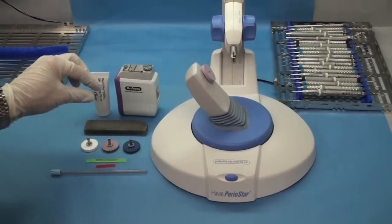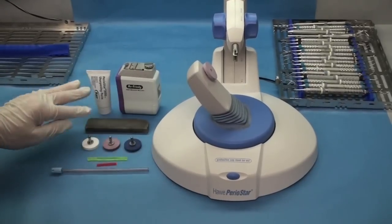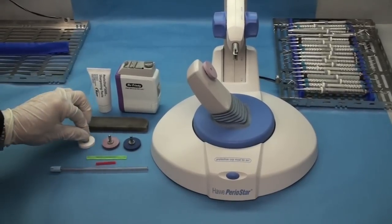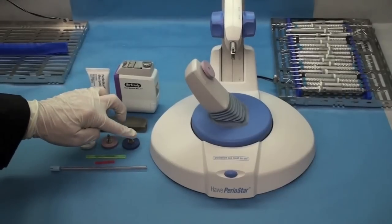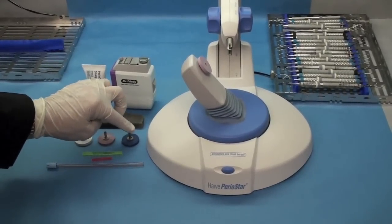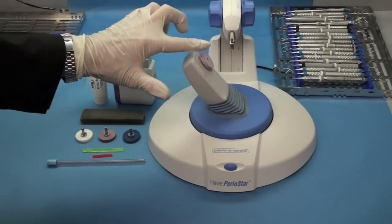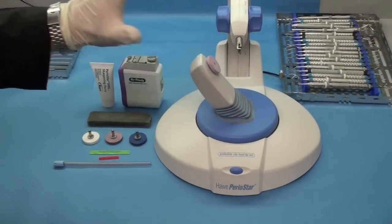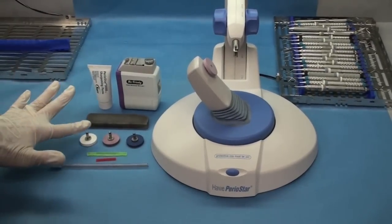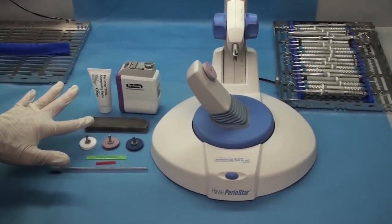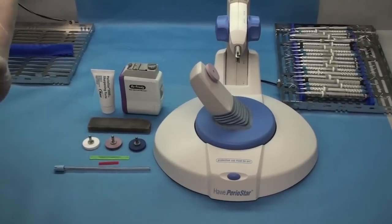With the Periostar comes three different sharpening stones. The white is fine, the pink is medium, and the blue is coarse. So your more dull instruments, you'll need to use the blue. We usually use the pink one that's kind of right in the middle. The white one, when you have brand new instruments, is a great one to use just to kind of touch them up a little bit.